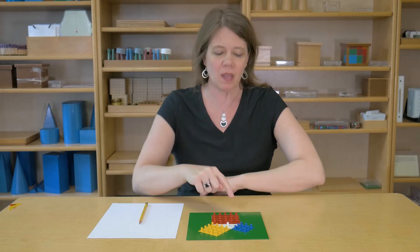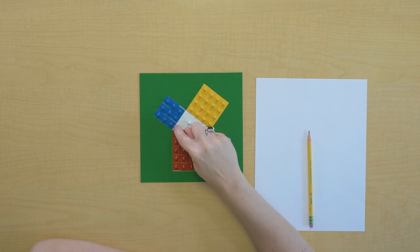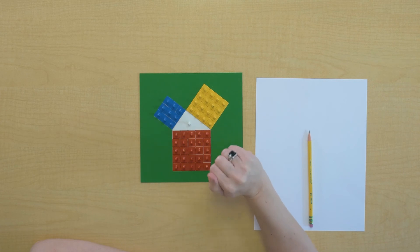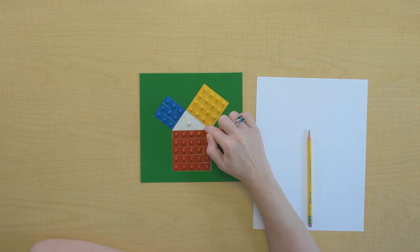I can see here that this leg of the triangle has a value of one, two, three of these units. It has a length of three. And here on this side, this leg, I can see a length of one, two, three, four.